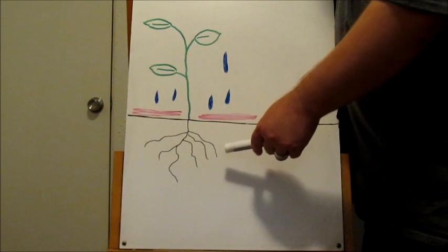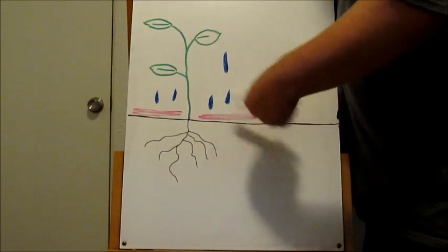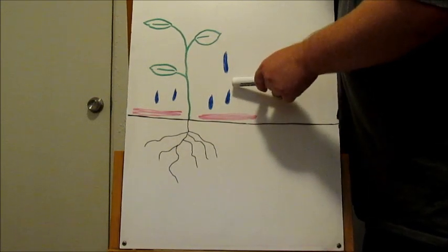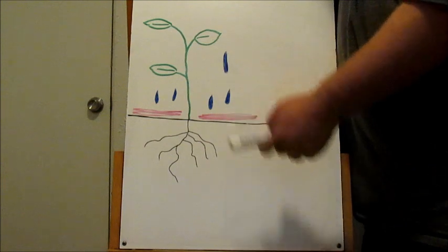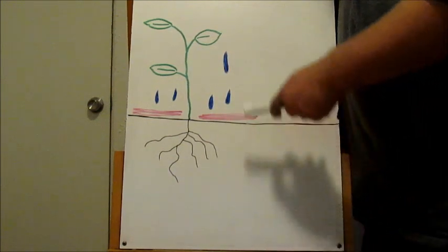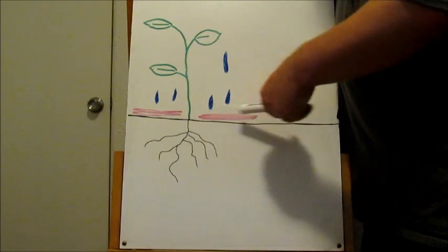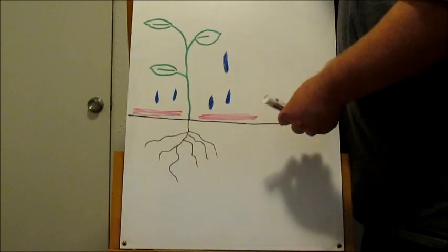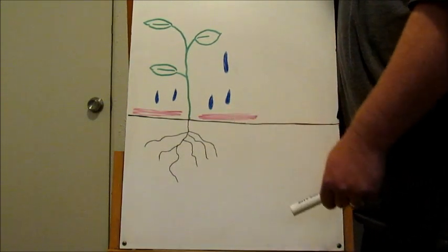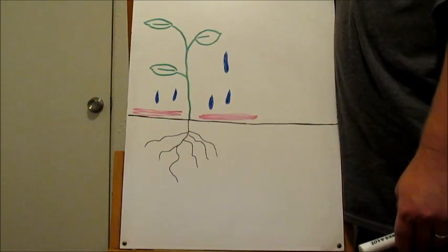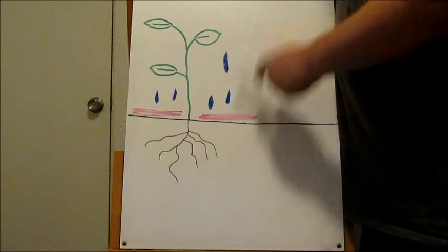That's how natural compost tea happens. Nature doesn't add sugar to this, nature doesn't aerate it in a bucket for 72 hours or anything like that. It just plops some water on it, percolates through, and goes straight to the roots.